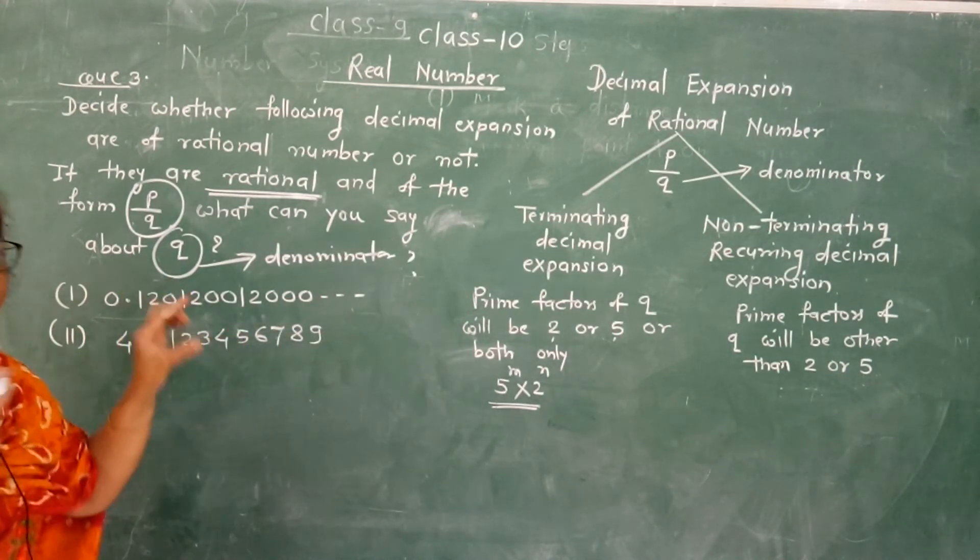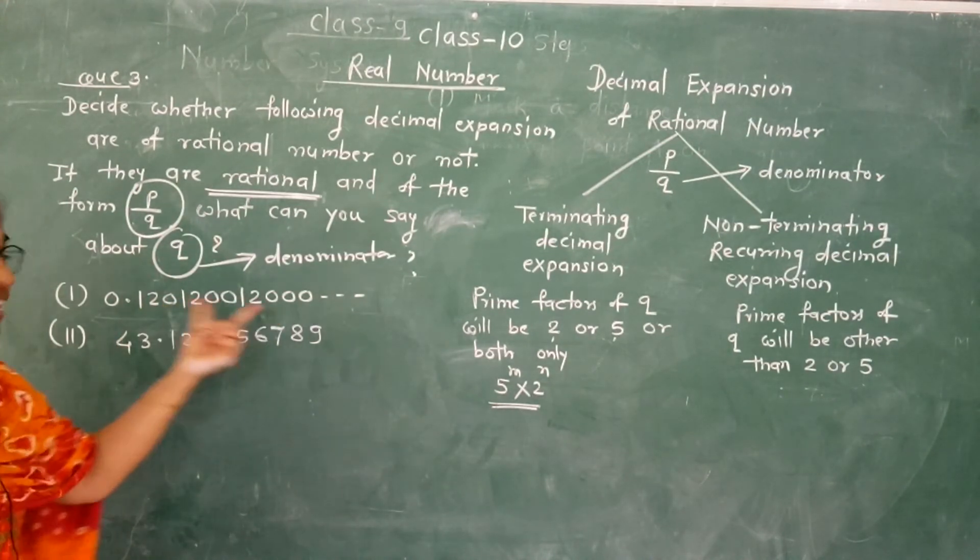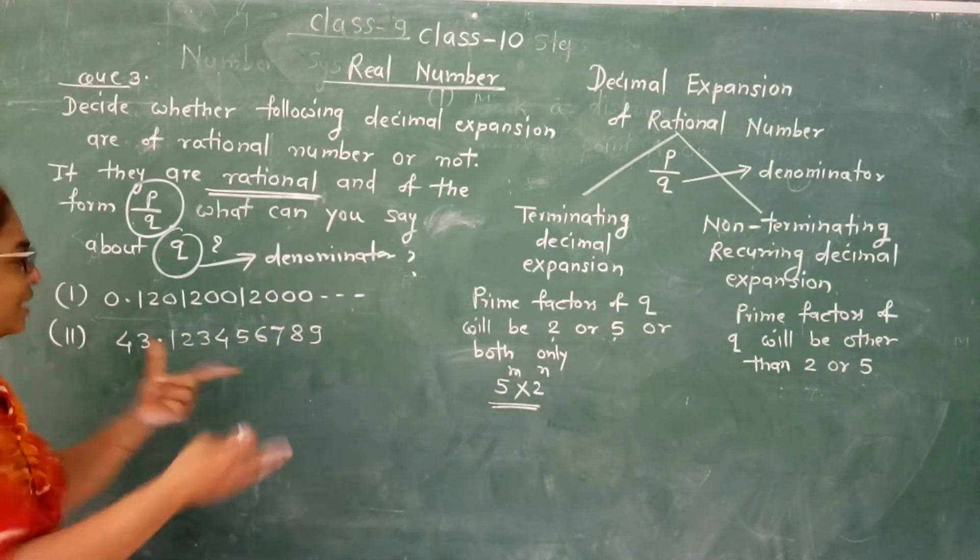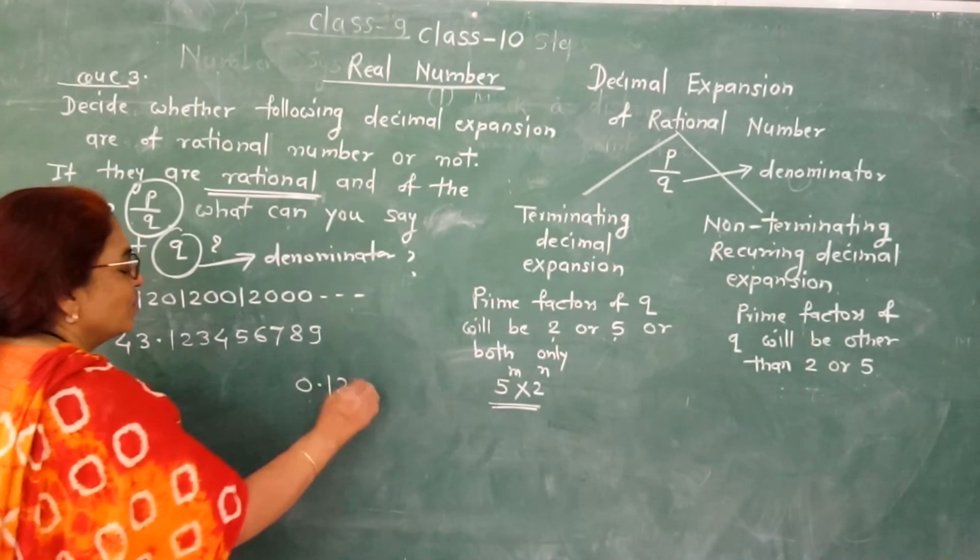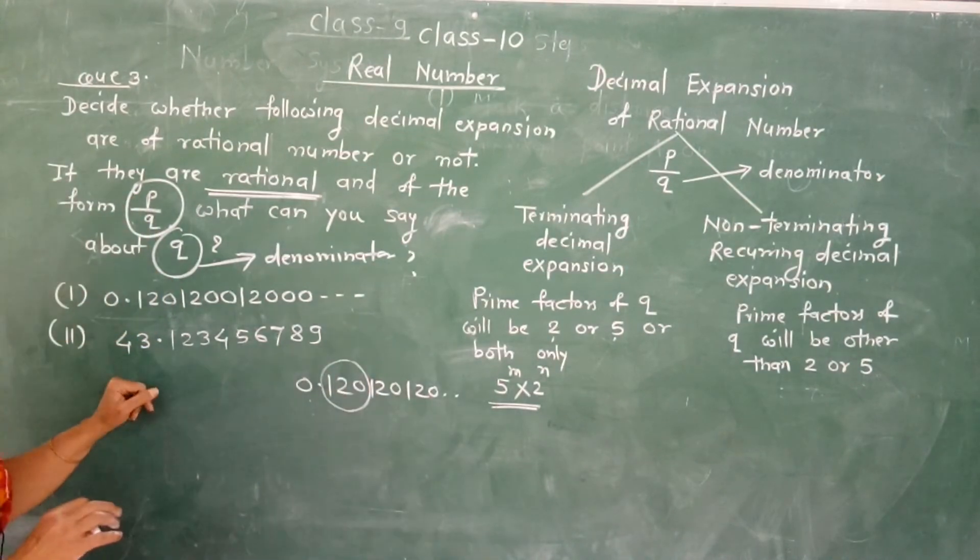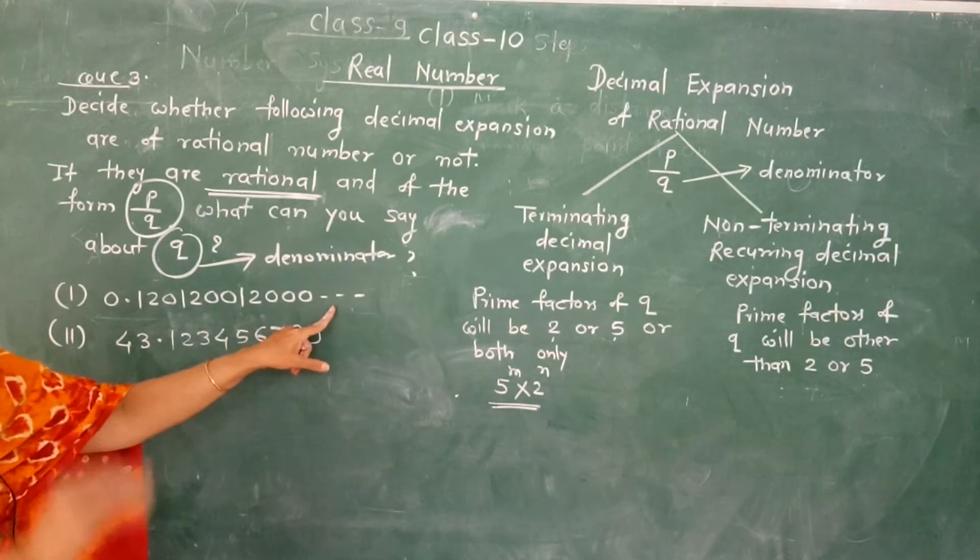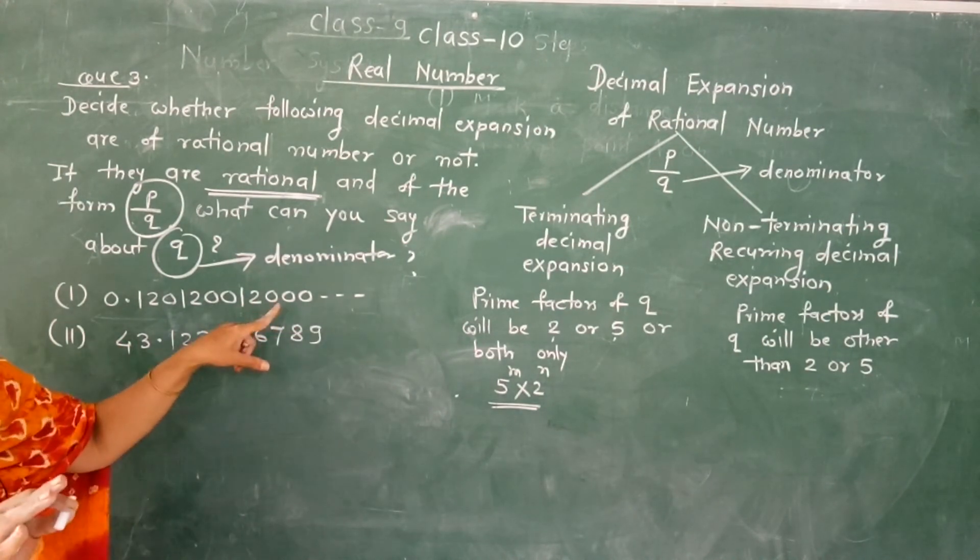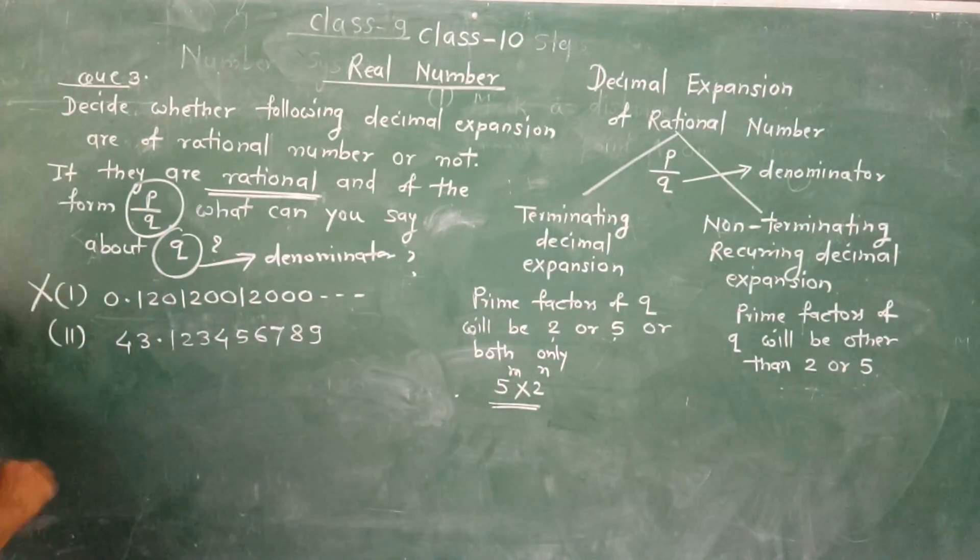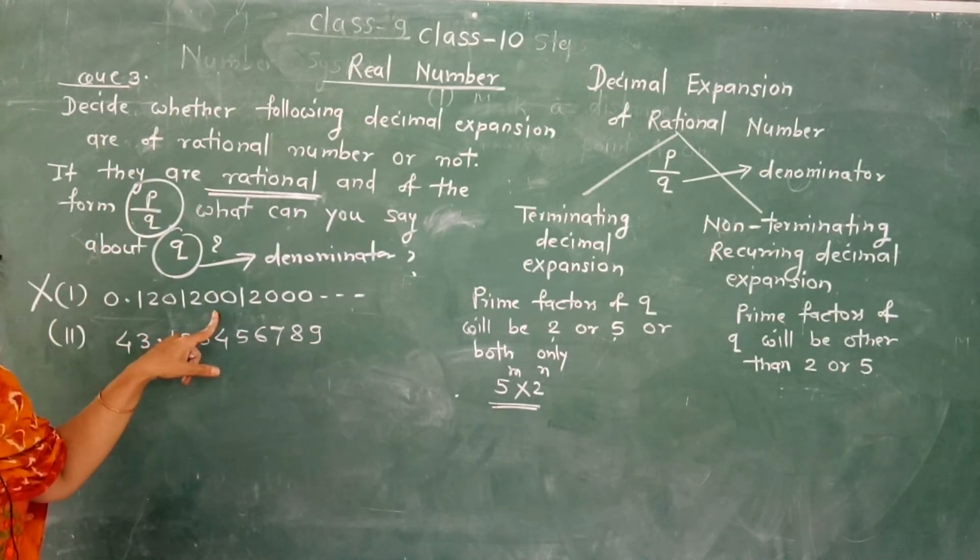This decimal expansion is non-terminating and non-recurring. No block repeats. There is no repeating block here. This decimal expansion is non-terminating and non-recurring, which means it is an irrational number. If it is irrational, we cannot write it in p upon q form.